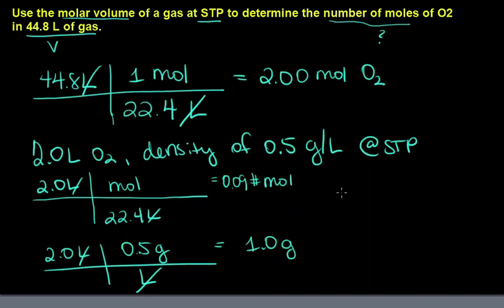And then to figure out grams per mole, you would take 1.0 grams divided by 0.09 moles. 1 divided by 0.09 is 11.1 grams per mole. So that could be one way that you find molecular mass. And of course, there's several other ways depending on the problem.